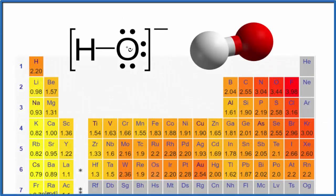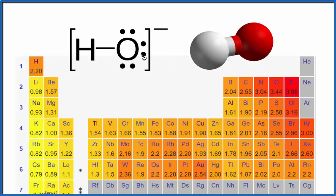Let's take a look at whether the hydroxide ion OH- is polar or nonpolar. So we have our Lewis structure here. In these brackets, they mean that we have an extra negative charge on the hydroxide ion — that's why it's an ion. It has a negative charge here. Specifically, it's an anion.